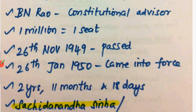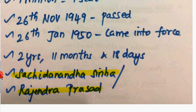The Constitution was passed on 26 November 1949. On 26 November 1949, they passed this act. The Constitution came into force on 26th January 1950, which is why we celebrate Republic Day on 26th January.